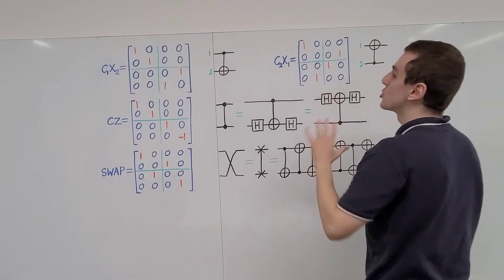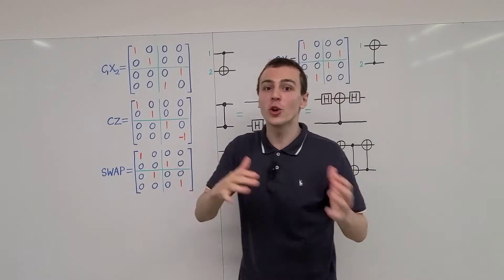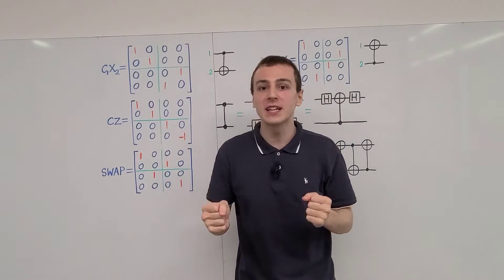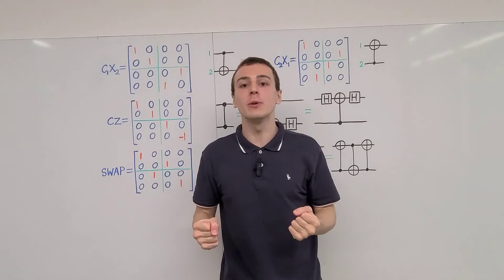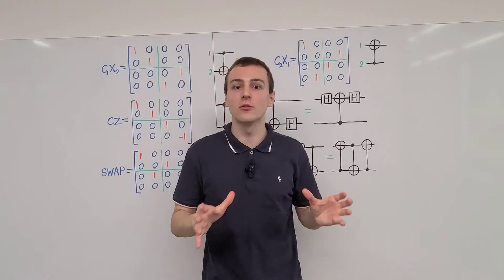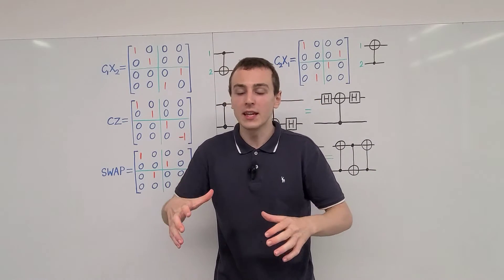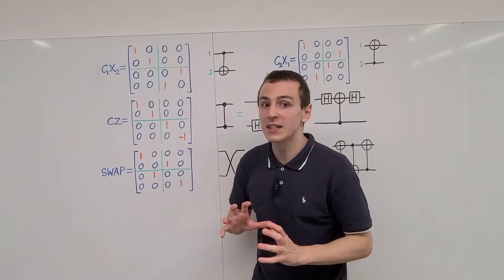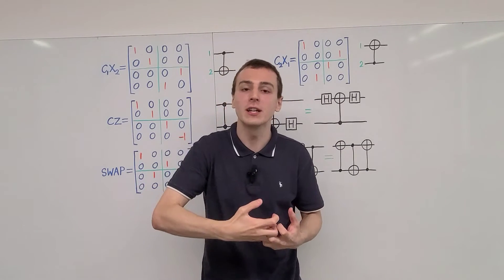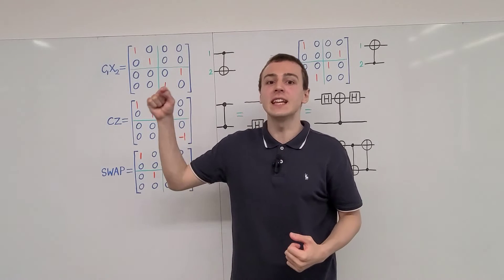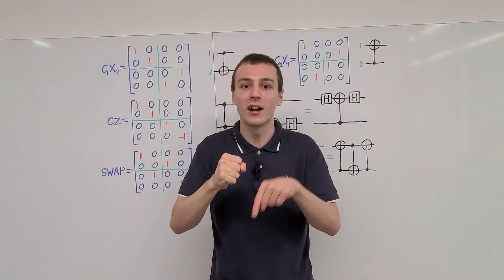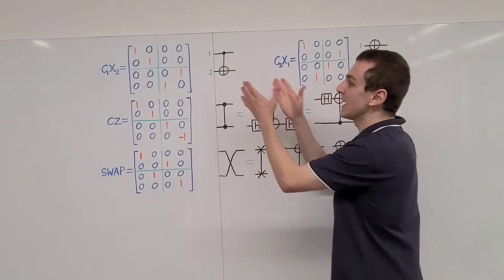So we have two versions of the controlled NOT gate, differing depending on which qubit is the control and which is the target. In general, for any controlled unitary, the targeted qubit has that unitary applied to it only conditional on the state of the control qubit — we're using one qubit to influence another.